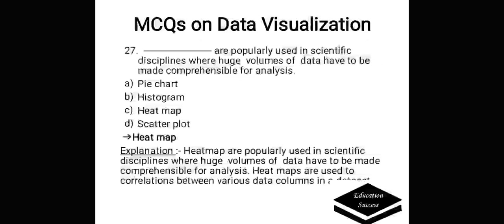Which are popularly used in scientific disciplines where huge volumes of data have to be made compressible for analysis? Options are: A. Pie chart, B. Histogram, C. Heat map, D. Scatter plot. Correct answer is heat map. Heat maps are popularly used in scientific disciplines where huge volumes of data have to be made compressible for analysis. Heat maps are also used to show correlations between various data columns in a data set.